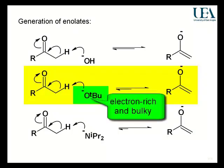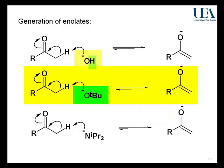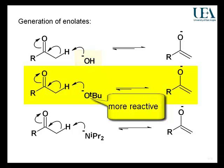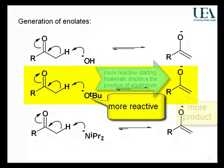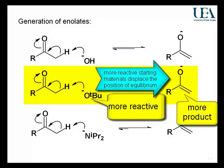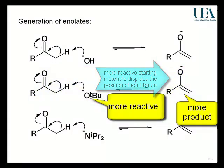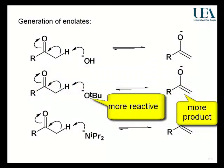The tertiary butoxide anion is more reactive than the hydroxide anion because instead of an H, we've got a lot of electron-rich carbon-carbon bonds. That's the first thing to say about it — it's more reactive. And if it's more reactive, it will influence the position of the equilibrium. We've increased the reactivity on the starting material side, so we would expect a greater concentration of the product at equilibrium, and I've represented that by the visual device of the different lengths of the arrows.